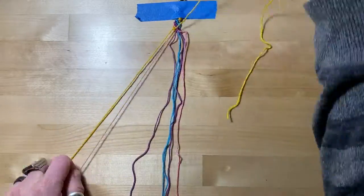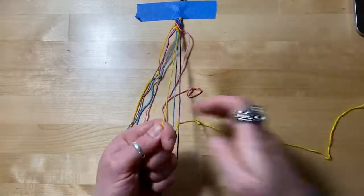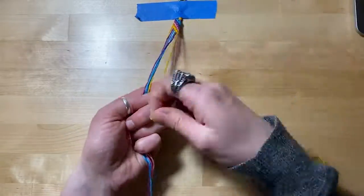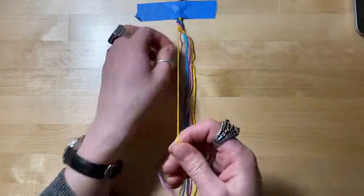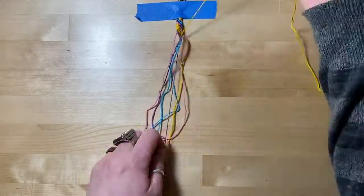Putting two knots on each string really helps the bracelet to lay flat. If you just do one knot on each string, it wants to twist up into like a spiral, so I definitely suggest doing two knots on each string as you go across.